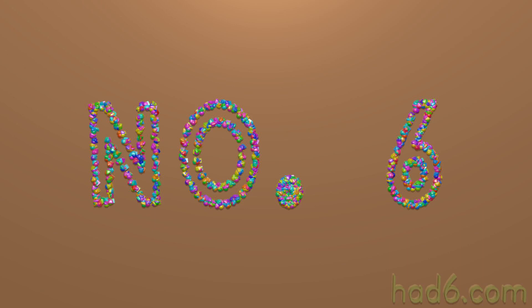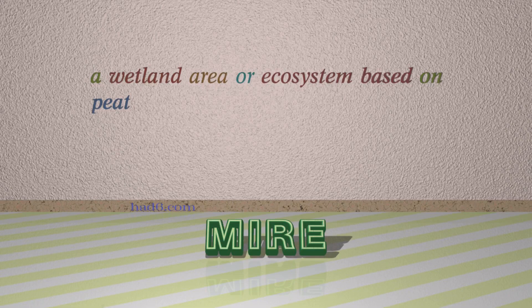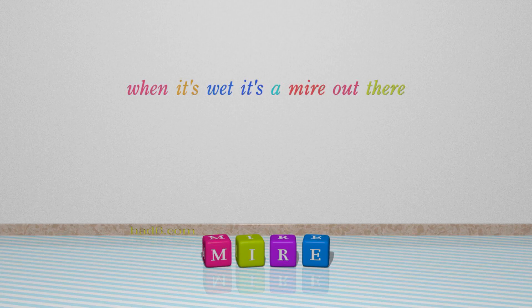Number 6: Mire. Which means a wetland area or ecosystem based on peat. For example: When it's wet, it's a mire out there.